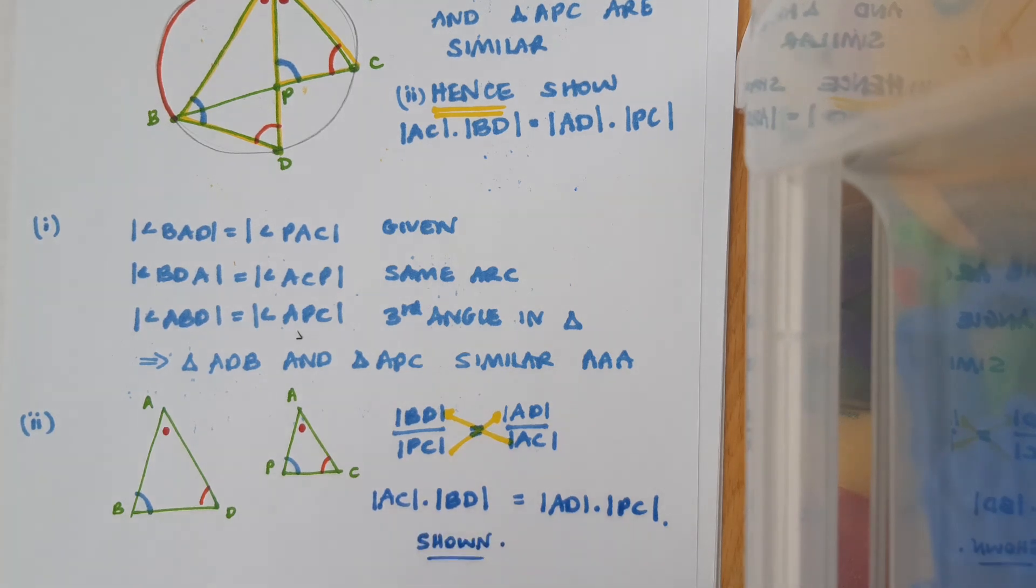So it has been shown. Notice that I've got a dot in between my line lengths here, AC and BD. That dot in this context just indicates multiplication.